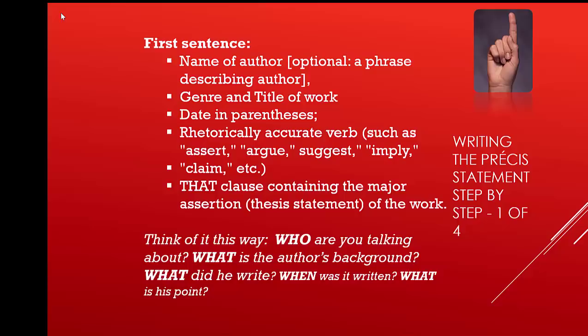The first sentence contains all of the MLA bibliographic information about the piece. It must include the name of the author. If there is no author, then it is the publisher that becomes the author of the piece. It also needs to contain the genre of the work — is it a magazine article, newspaper article, journal entry? Whatever type of piece it is, that's what you want to put in. You also need the title of the work, and in parentheses in MLA format, you need the date of publication.